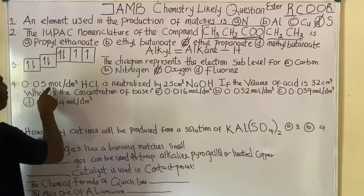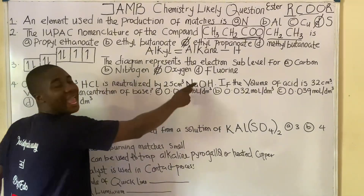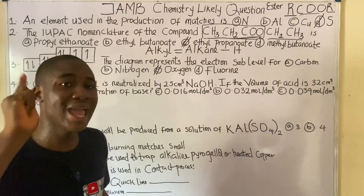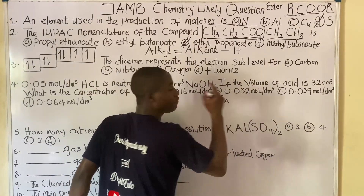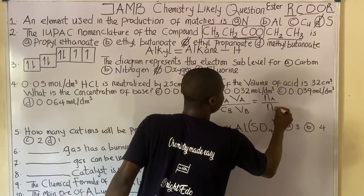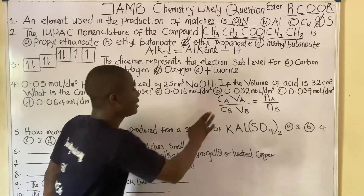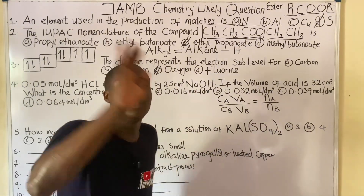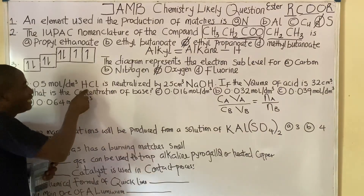The next practice question says: 0.05 mol/dm³ HCl is neutralized by 25 cm³ NaOH. If the volume of the acid is 32 cm³, what is the concentration of the base? When I see the word 'neutralized,' I use the titration formula: CaVa / CbVb = Na / Nb, where Ca = concentration of acid, Va = volume of acid, Cb = concentration of base, Vb = volume of base, Na = moles of acid, and Nb = moles of base.